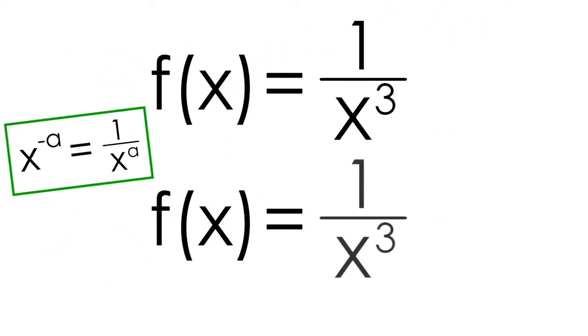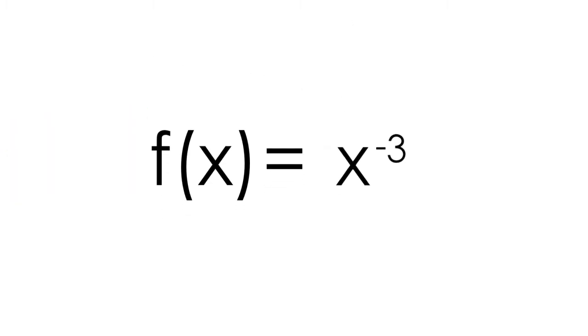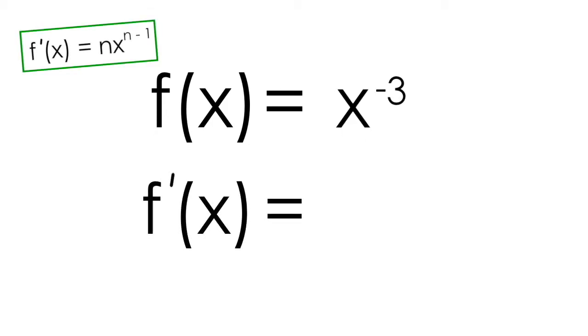So I can rewrite this function in a different form by taking the x³ in the denominator, bringing it up top, and making the exponent negative. You can see our function is now in the form x^n, which means I can use the power rule for derivatives.